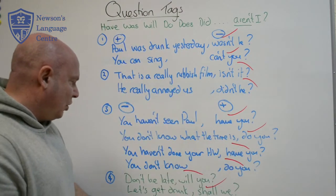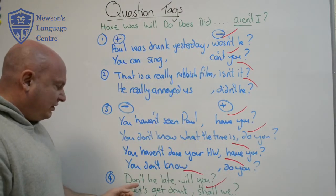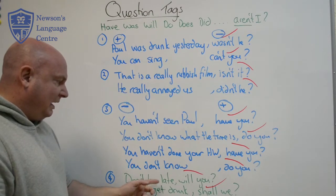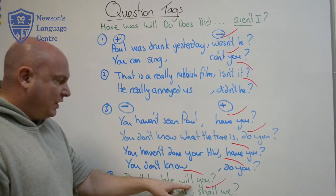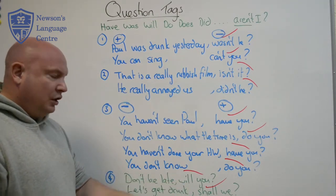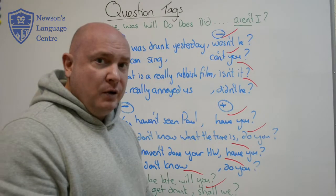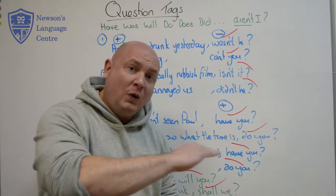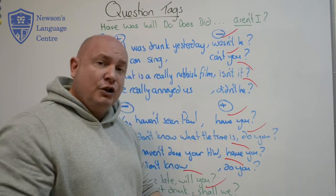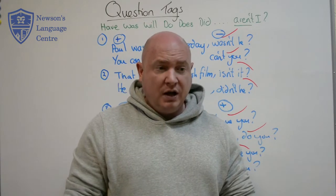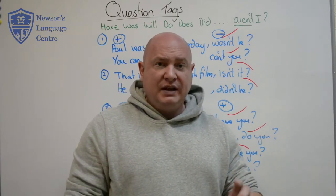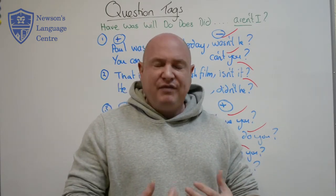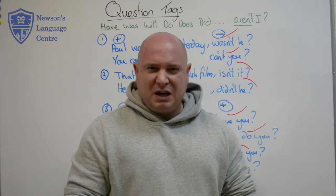Just to finish off — if we start with a negative imperative like 'don't be late,' we always use the question tag 'will.' The intonation in this structure is always flat: 'Don't be late, will you?' 'Don't forget, will you?' 'Don't forget to tell me what time you're leaving, will you?' — a very very common structure in English.